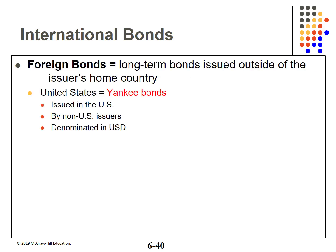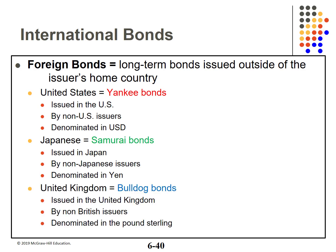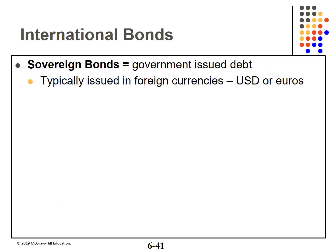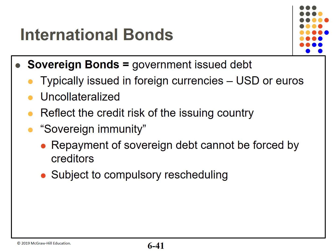Foreign bonds are different. Yankee bonds are issued in the United States, denominated in U.S. dollars, but by non-U.S. issuers. Samurai bonds are issued in Japan, denominated in yen, but by non-Japanese issuers. Bulldog bonds are issued in the United Kingdom, denominated in pound sterling, but by non-British issuers. Finally, sovereign bonds are government-issued debt, typically issued in foreign currencies with the U.S. dollar and the Euro leading. They are uncollateralized and reflect the risk of the issuing country. Under sovereign immunity, sovereign debt repayment cannot be forced — remember Greece.